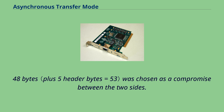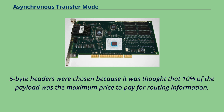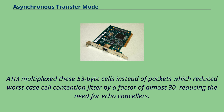5-byte headers were chosen because it was thought that 10% of the payload was the maximum price to pay for routing information. ATM multiplexed these 53-byte cells instead of packets, which reduced worst-case cell contention jitter by a factor of almost 30, reducing the need for echo cancellers.